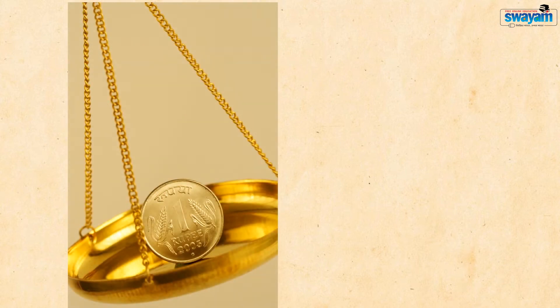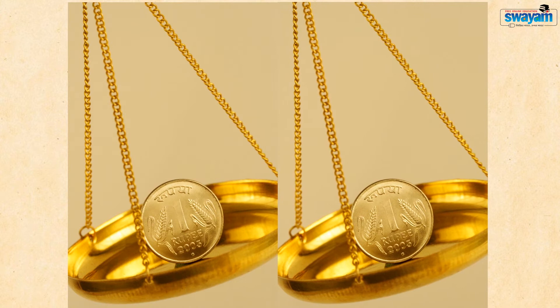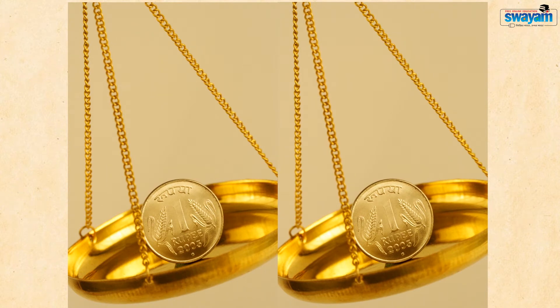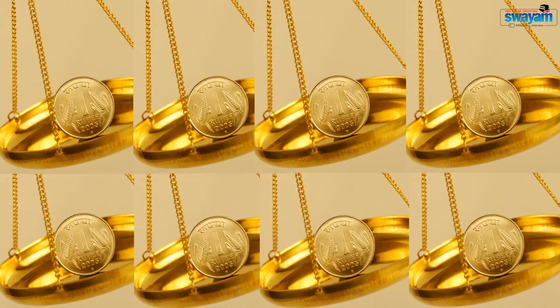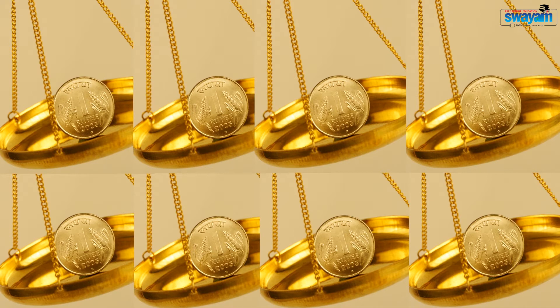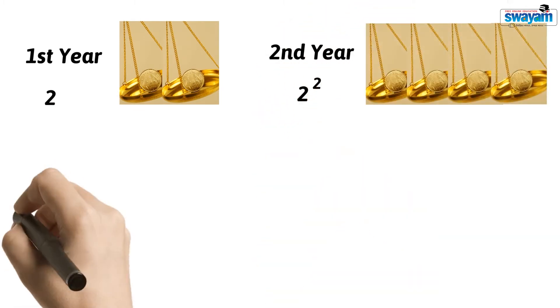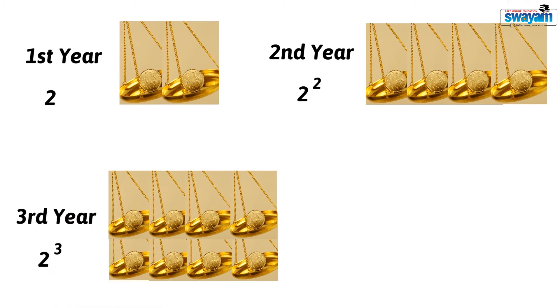Consider a magical case where your money doubles every year. Suppose you have one rupee and it doubles next year — you will have two rupees. The 2 rupees when doubled becomes 4 rupees, and 4 rupees when doubled becomes 8 rupees. You can express this increase in value in terms of powers of 2: first year it is 2, second year it is 2 squared that is 4, third year it is 2 cubed that is 8. So if you want to find the amount after N years when your money doubles every year, you can use the formula 2 to the power N.